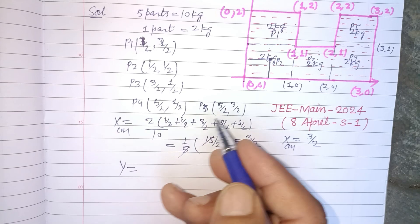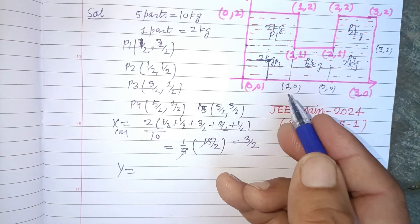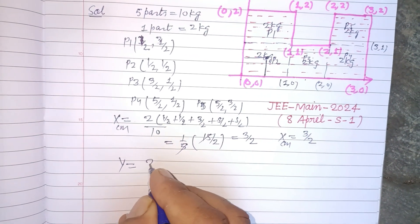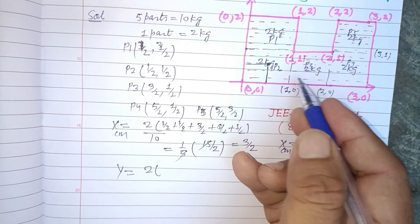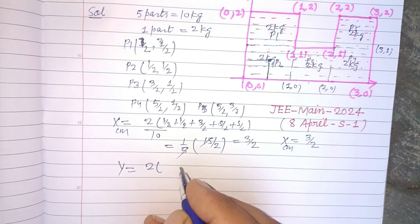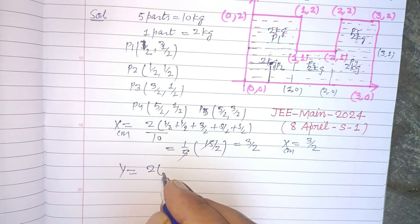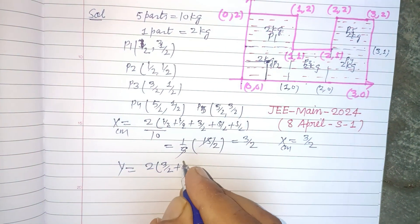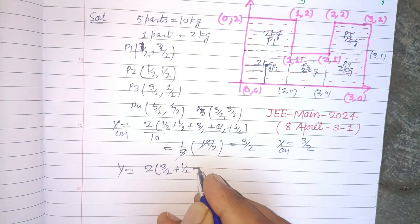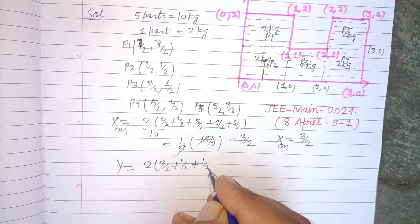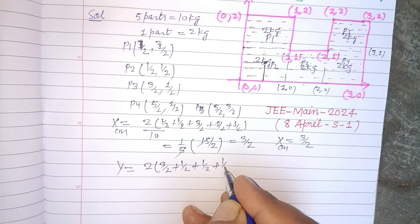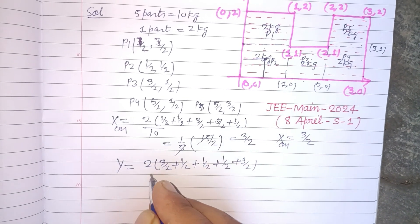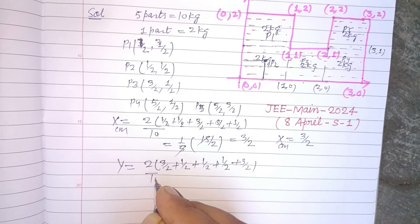Now we take the y-coordinate of center of mass using the same approach — 2 is the common mass. The y-coordinates are: 1/2, 1/2, 1/2, 1/2, and 3/2, divided by 10.